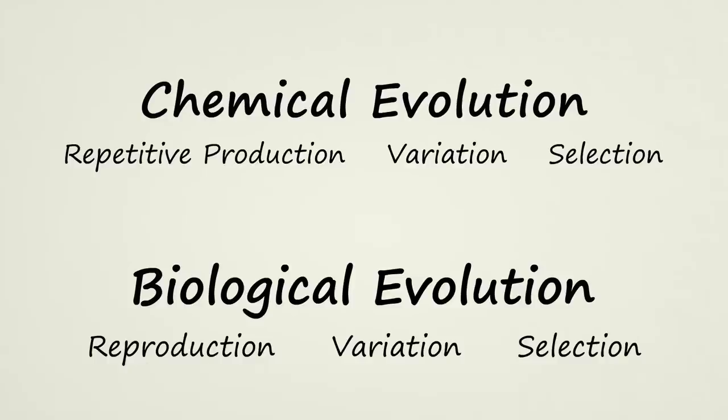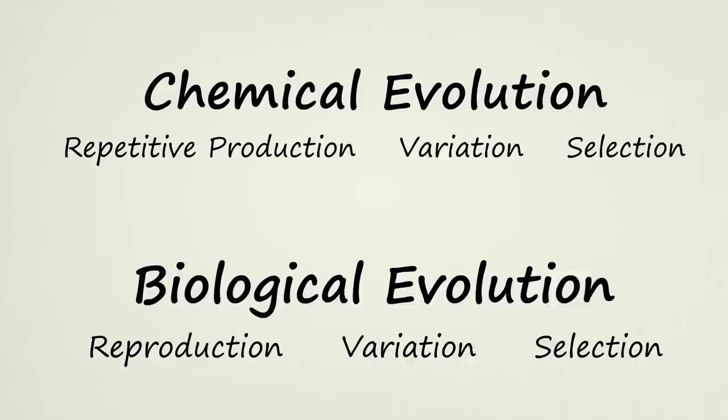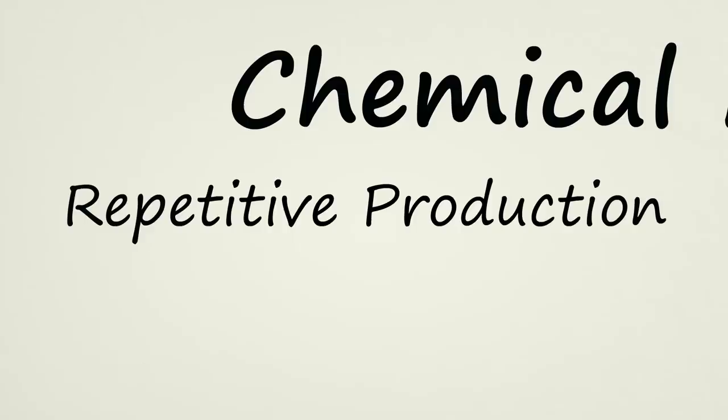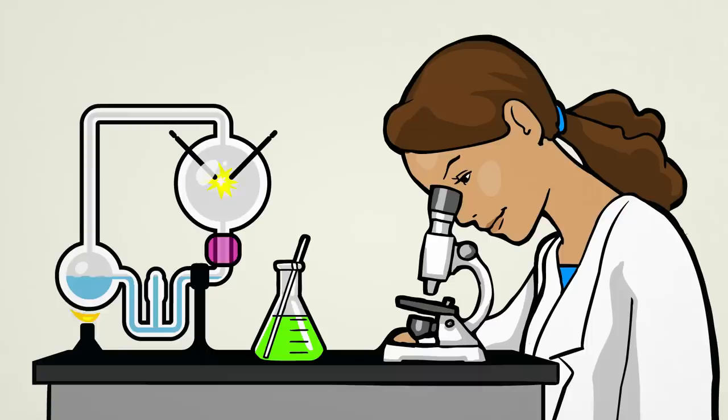So, to sum things up, the main difference between chemical evolution and biological evolution is that chemical evolution can produce new characteristics and abilities without depending on reproduction. Because of this, chemical evolution is being investigated as a possible cause for the origin of life.